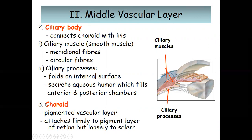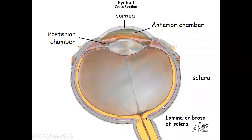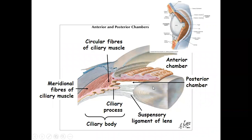The last component of the middle vascular layer is the choroid, a pigmented vascular layer. The choroid attaches firmly to the pigment layer of the retina but is loosely attached to the sclera. The ciliary body has two components: the ciliary muscle with circular fibers, and the folded internal surface.